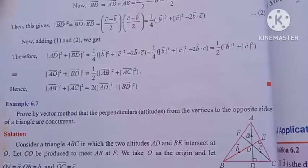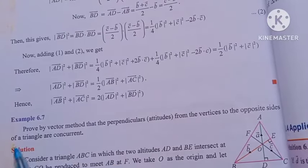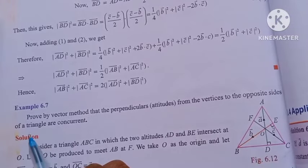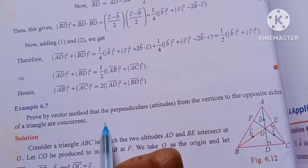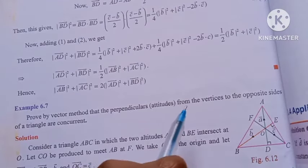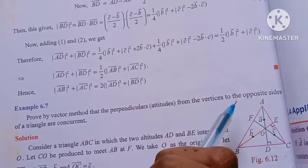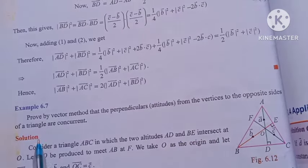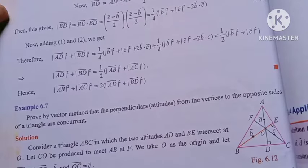Hi students, I am Vino. 12th Math Chapter 6, Example 6.7. I will talk about the question: proof by vector method that the perpendiculars from the vertices to the opposite sides of a triangle are concurrent.